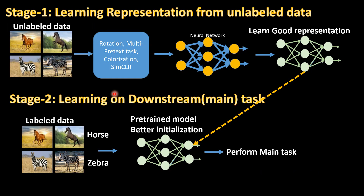To generalize, you can divide self-supervised learning into two sections. Stage one is learning representations from unlabeled data — you either design a pretext task like rotation or colorization, or use contrastive learning like SimCLR. Once you have learned a good representation, you transfer it to your main downstream task, which is done in a supervised way but requires much less labeled data.